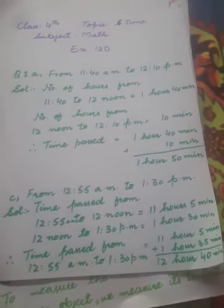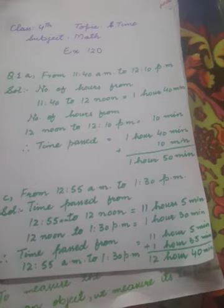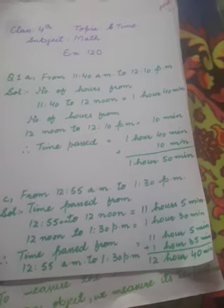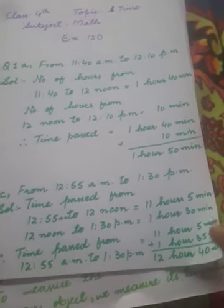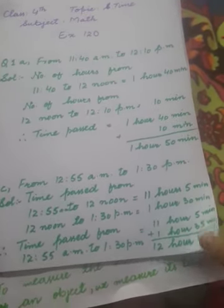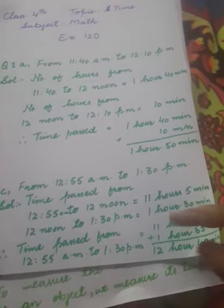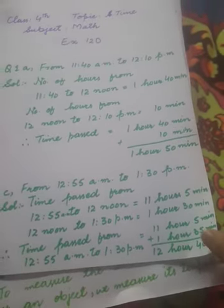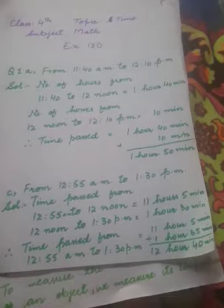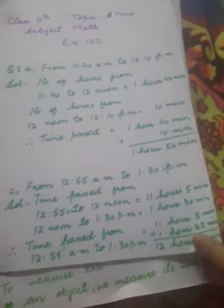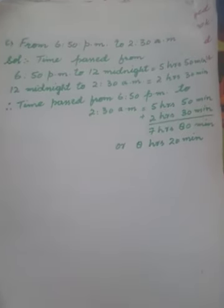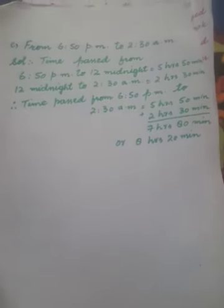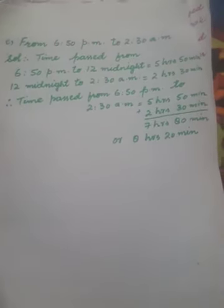So the total time passed is 11 hours 5 minutes plus 1 hour 35 minutes. When we add 35 and 5, we get 40 minutes. And 11 plus 1 is 12 hours. That means how much time has passed: 12 hours 40 minutes. Similarly, I have done part e as well. Part e is from 6:50 PM to 2:30 AM.